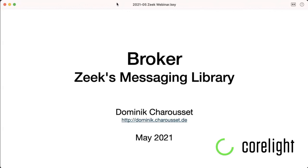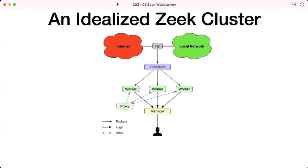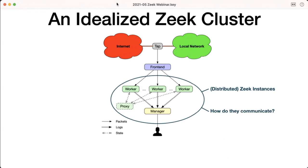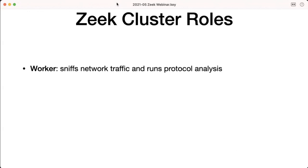Before diving into Broker, we first need a quick look at Zeek clusters. This is the idealized Zeek cluster you may know in some variation. Generally, you have the internet, your local network, then a tap and frontend which distributes TCP streams to your workers. Then you have your distributed Zeek instances. The question is: how do they communicate, and what infrastructure do they need?